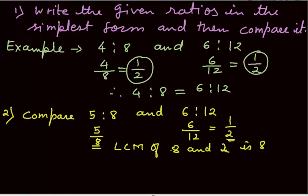Now, we will make the denominator same as that of LCM. I am multiplying here by 1 and here by 1. So, 5 is to 8, 5 over 8. In the second ratio, it is 1 over 2. I am multiplying both the denominator and numerator by 4 so as to make the denominator same as that of LCM. So, it will be 4 over 8.